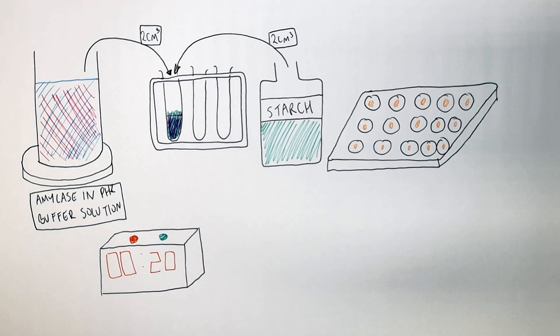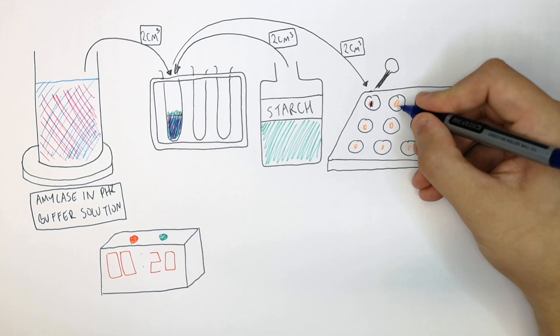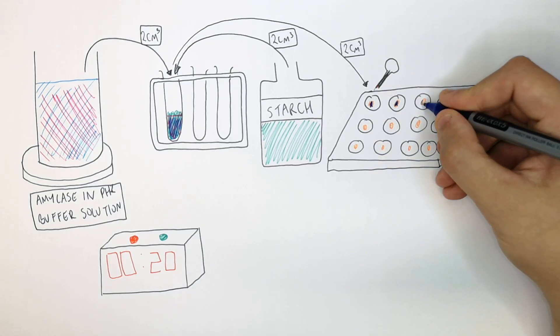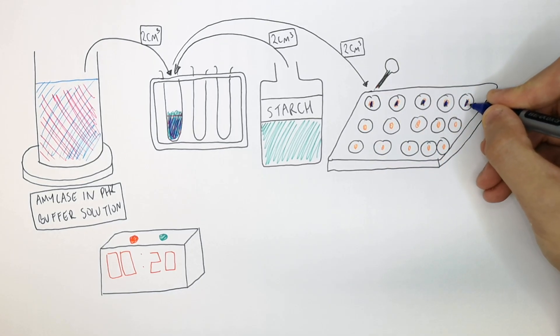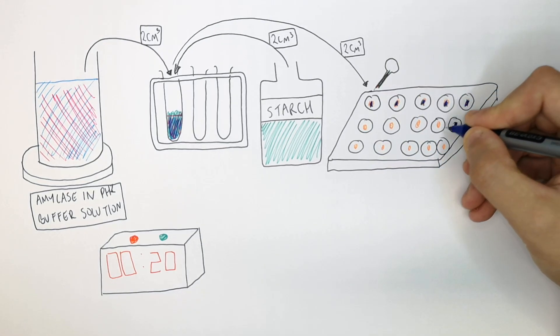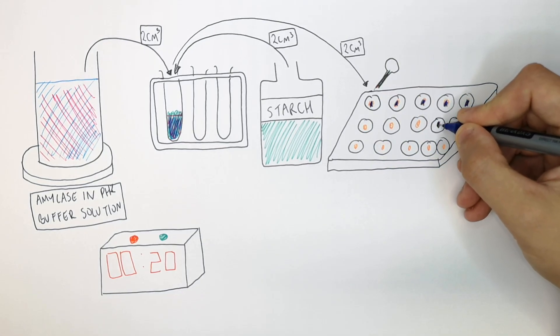Get your well plate with one drop of iodine in each well, then press start once the starch and amylase have been mixed. Every 20 seconds, add one drop of the amylase, starch, and pH solution into each well.